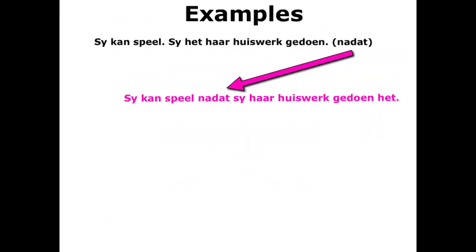Shall we look at an example? Sy kan speel. Sy het haar huiswerk gedoen. Verbind met na dat. First sentence stays the same: Sy kan speel. Then na dat — you'll notice that none of the Groep 3 words have any punctuation attached to them, so we don't have to put any down. Then we put down the second sentence without its verb. Now, het is technically not a helping verb, so it needs to go all the way to the end. So we put down: Sy haar huiswerk gedoen — without het — and then we put het down at the end: Sy kan speel, na dat sy haar huiswerk gedoen het.